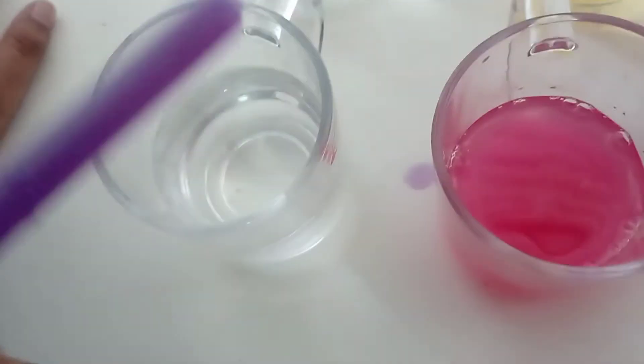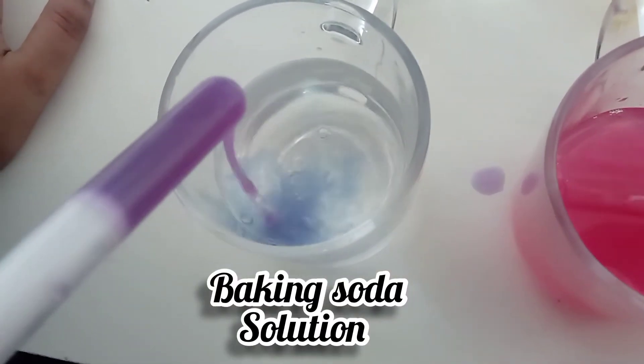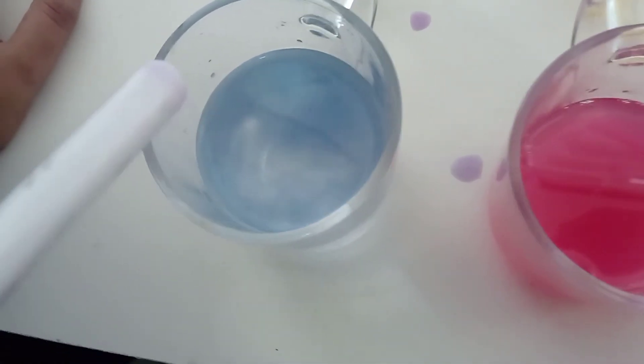Now we are putting in baking soda. The purple color is becoming dark blue. This is the baking soda water we had put in. Now the color is being darkened by the baking soda.